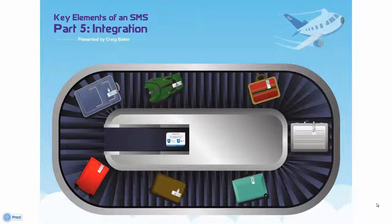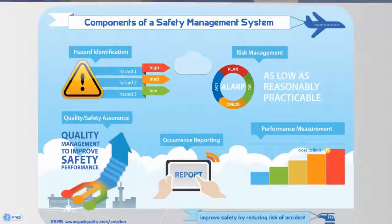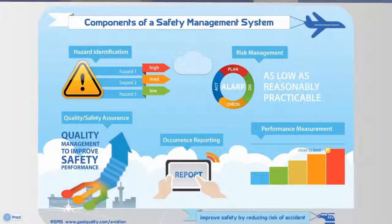We recognise that there are many systems involved in the efficient day-to-day running of an aviation organisation — by that, we mean bringing together all of the systems utilised to manage safety. An effective SMS should be underpinned by the principles of quality and safety assurance. Therefore, an SMS should integrate the areas of quality management systems, and this series has touched on how areas of quality contribute to the overall management of safety.